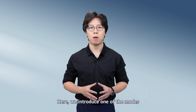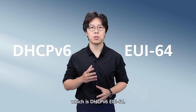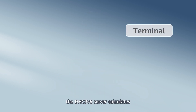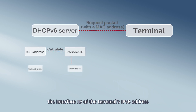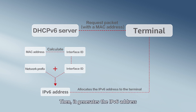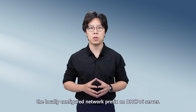Here we introduce one of the modes in DHCPv6 stateful address autoconfiguration, which is DHCPv6 EUI64. When a terminal uses this mode, the DHCPv6 server calculates the interface ID of the terminal's IPv6 address based on the terminal's MAC address. Then it generates the IPv6 address of the terminal based on the locally configured network prefix on the DHCPv6 server.